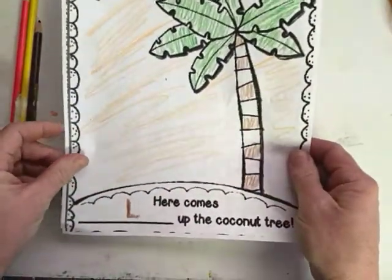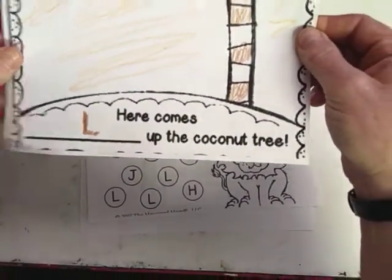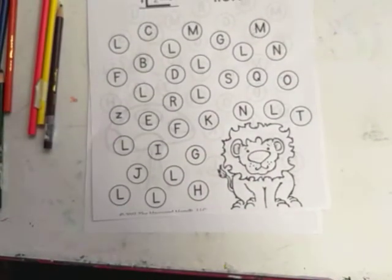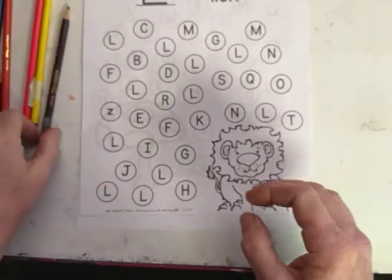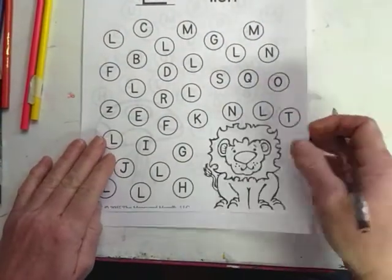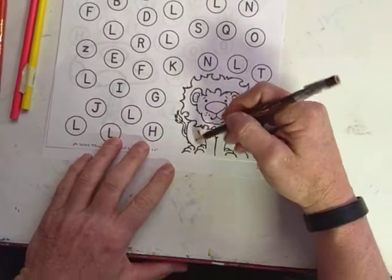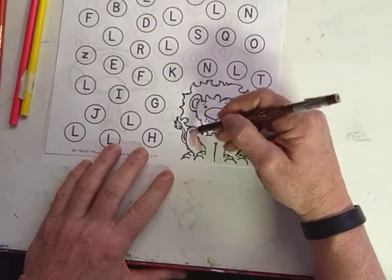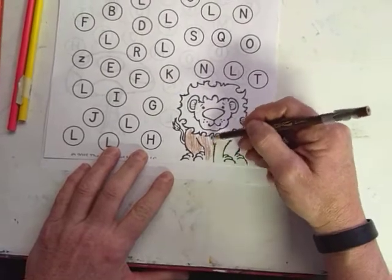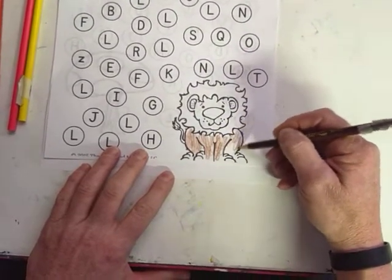And today, the letter L. Here comes L, up the coconut tree! Okay, let's get going on the letter L. L is for lion. There's a lion down there — let's give him a little bit of color. I like to have a little color in my page before we get started on learning these letters. Just makes it a little more visually interesting, something I like to do.